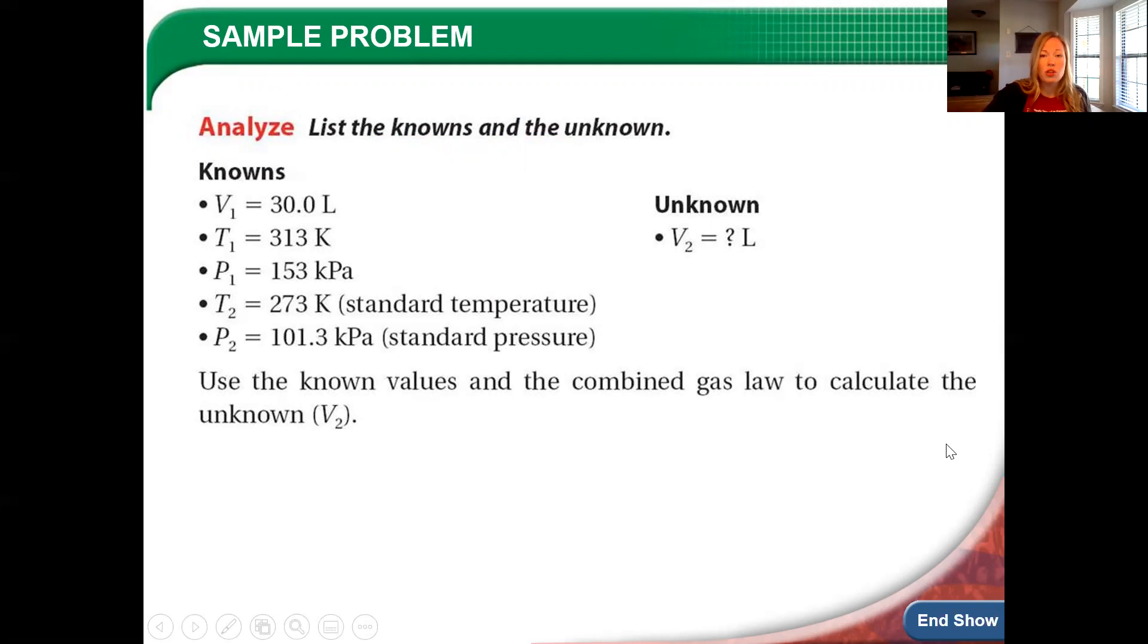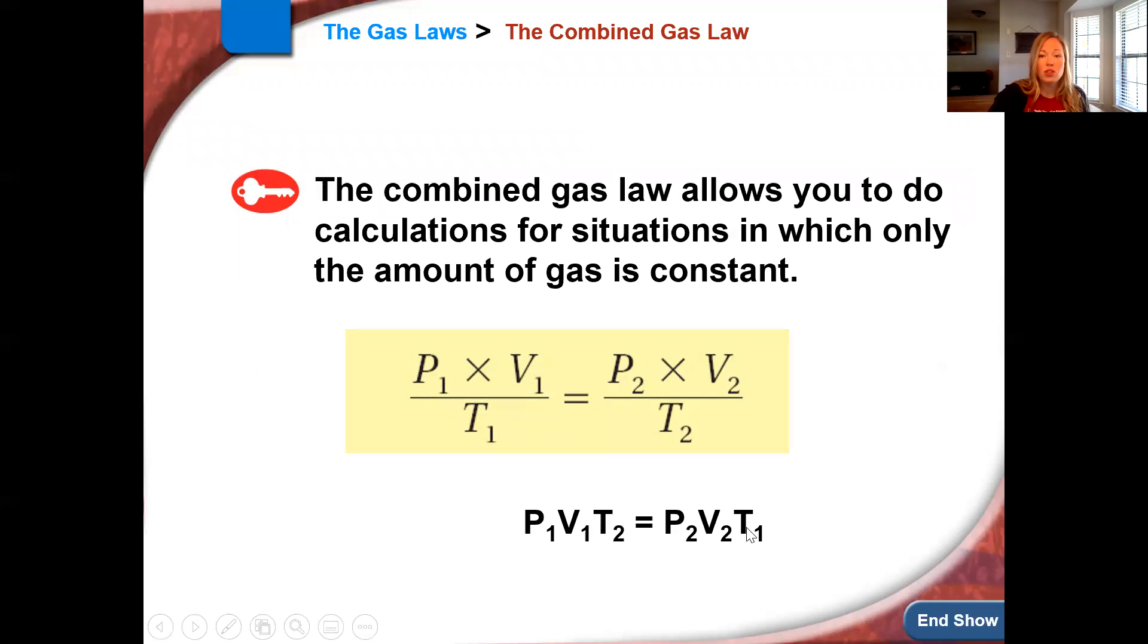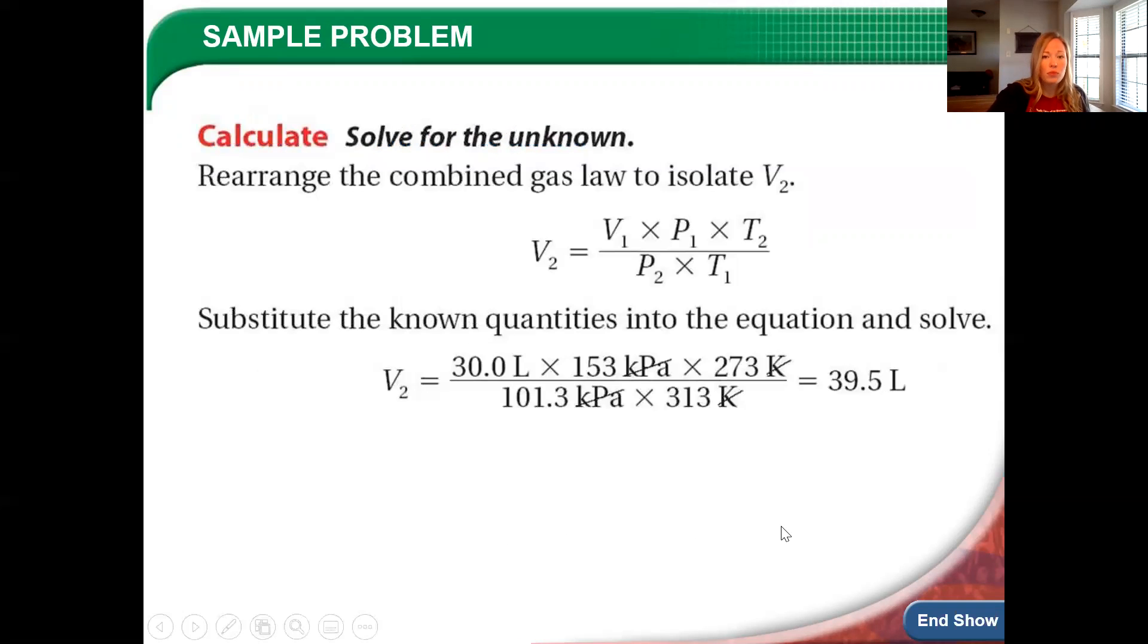So we're going to rearrange this formula to solve for V₂. We'll do the left side of the equation divided by P₂ and T₁. So V₁ times P₁ times T₂, divided by P₂ times T₁.